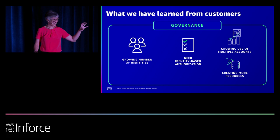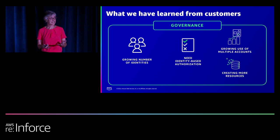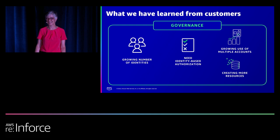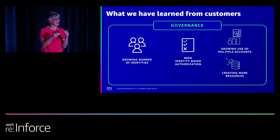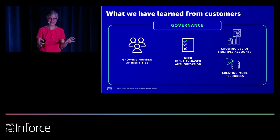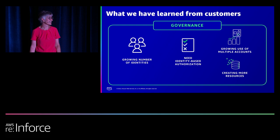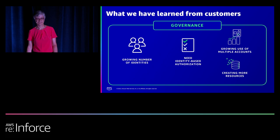For example, you might define an application using Service Catalog App Registry, then define separate accounts — each a built-in security boundary — for each stage as you build, test, and deploy. You might even define more granular resource groups for a component of that application or a set of related resources, so you can manage access just for that type or group of resources. That gives you a way to manage both your identities and resources as they grow.